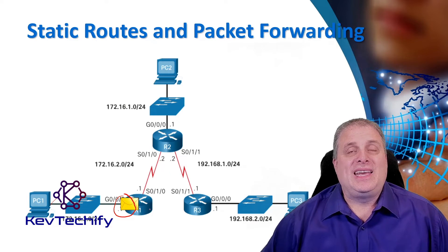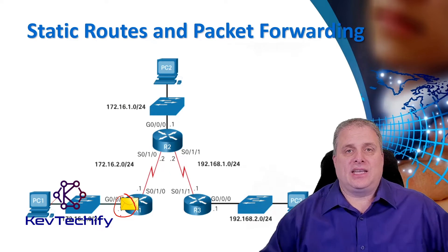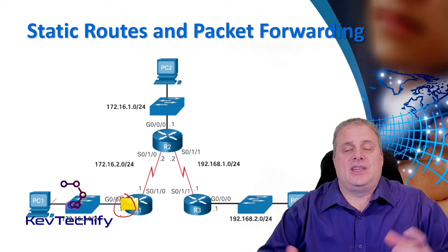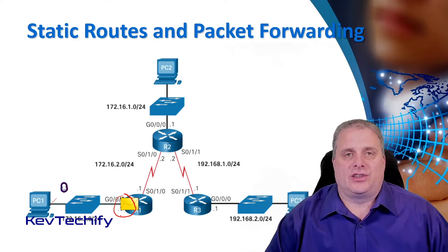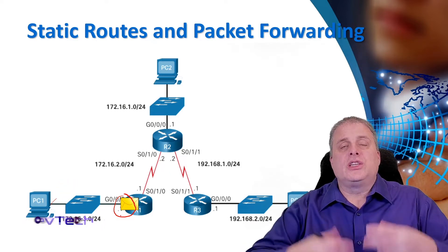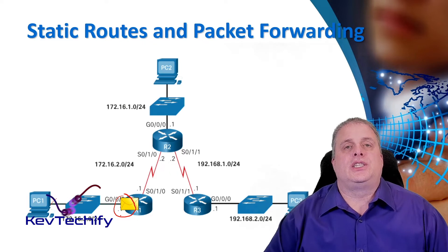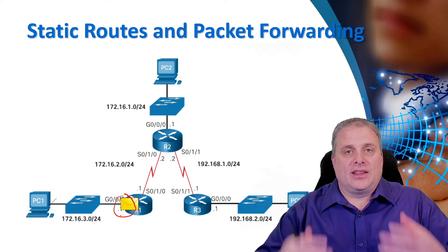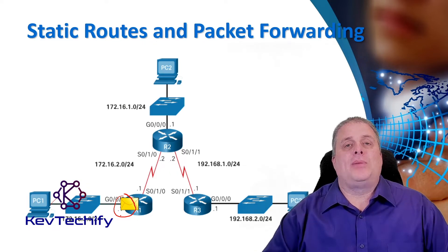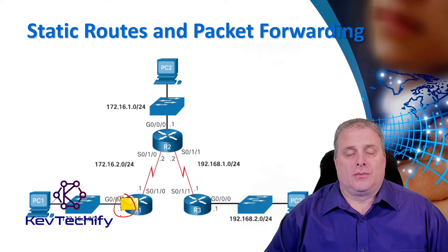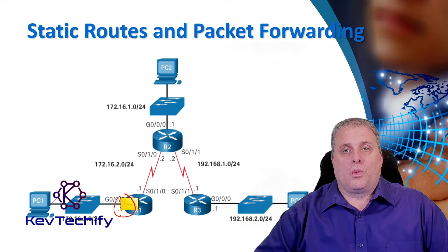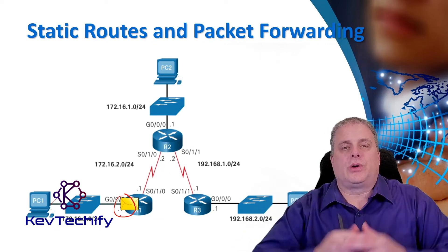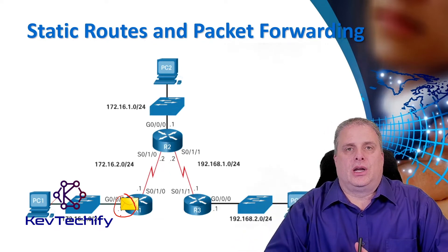When R1 gets that, it takes the frame off. It de-encapsulates it. It looks at the destination address — that layer 3 IP address. When it finds it, it looks through its routing tables.